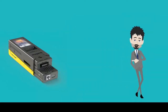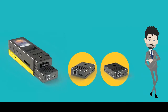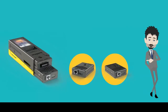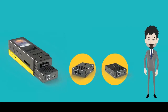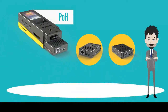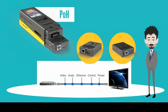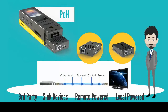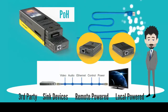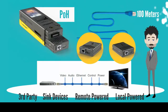The device is supplied with an HDBase-T transmitter and receiver, equipped with POH functionality, providing a highly efficient testing platform for HDBase-T infrastructure — either with third-party source or sync devices, remote-powered or local-powered devices, within the range of up to 100 meters of CAT-X cabling.